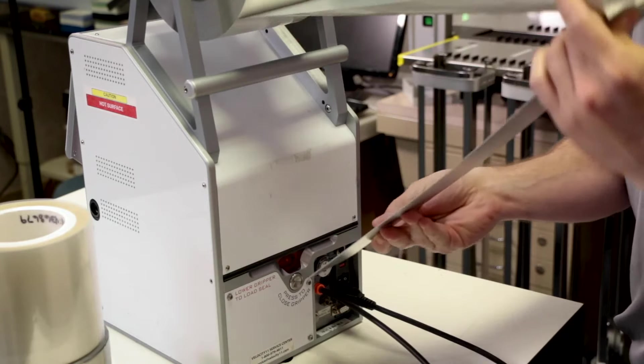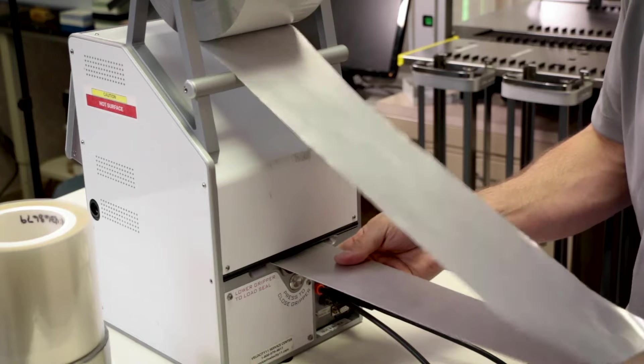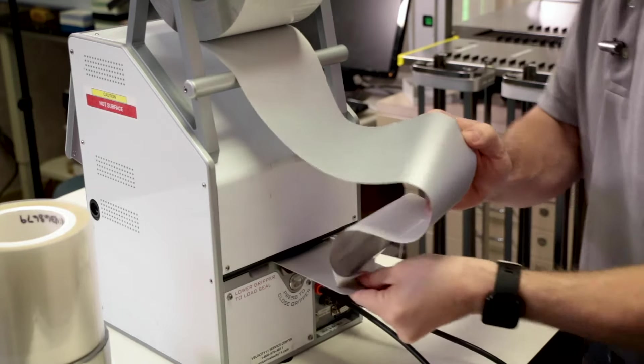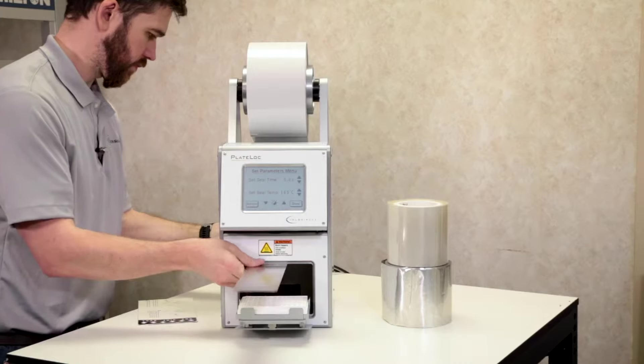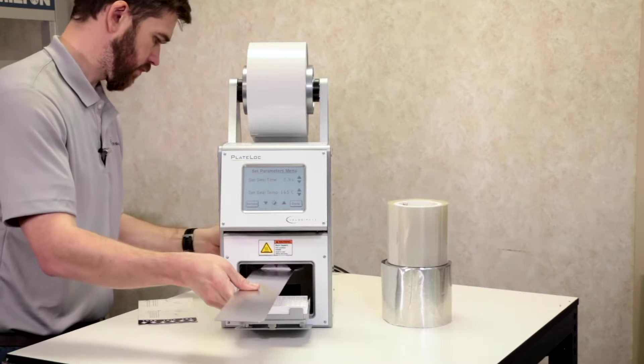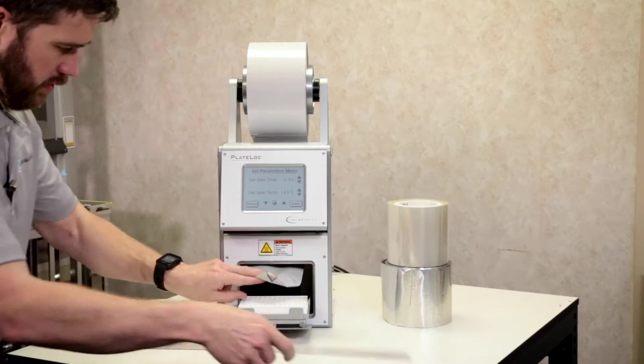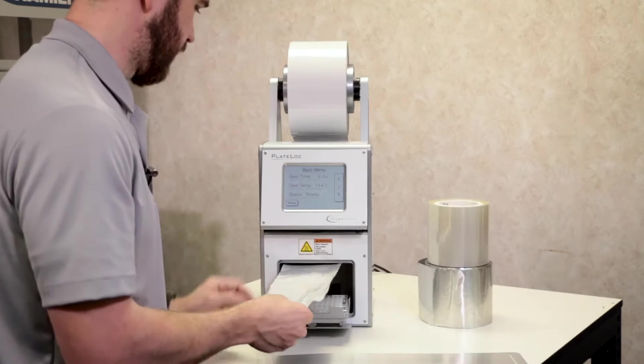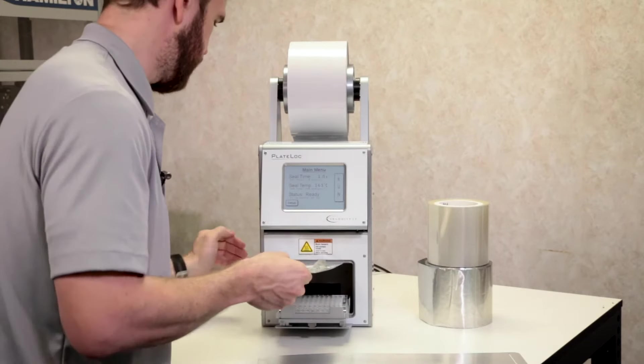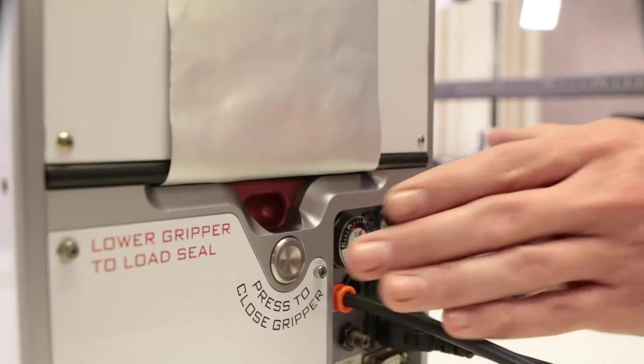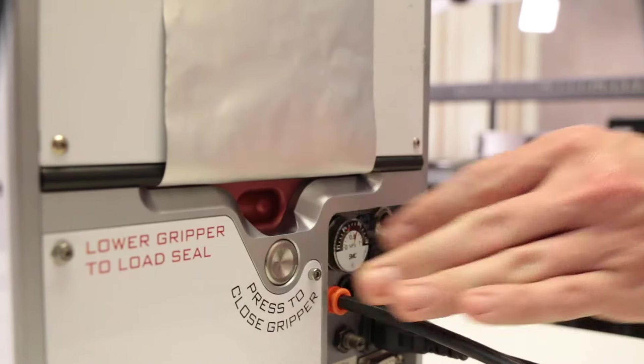Feed the card through the back of the plate lock. Push gently to get the film through the machine. Press the silver button in the rear of the machine to lower the gripper.